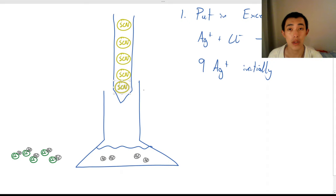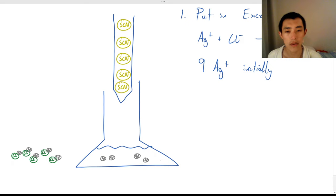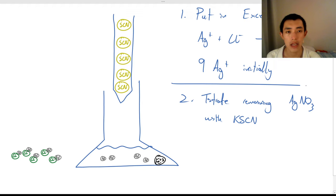You might remember this from module 5, the equilibrium between iron and thiocyanate. And actually, interestingly, we do put in some iron particles. So we also have some iron here. The second step is, so the first step is we put in excess amounts of silver nitrate. The second step is that we titrate the remaining AgNO3 with KSCN, and there's going to be another reaction occurring, and that is this reaction.